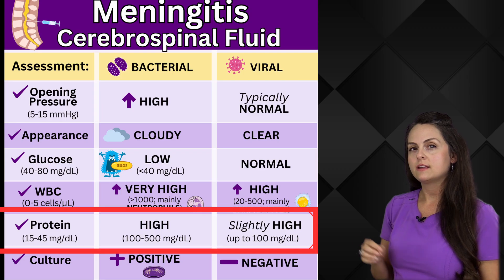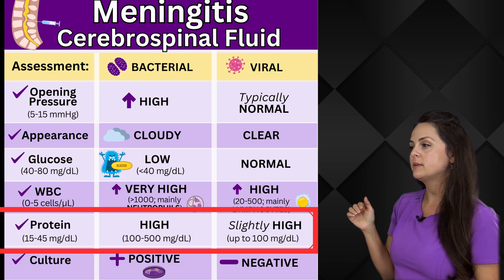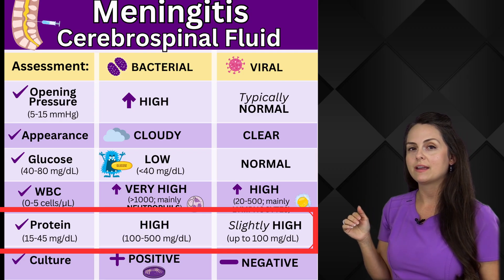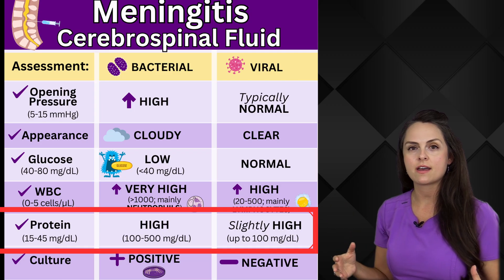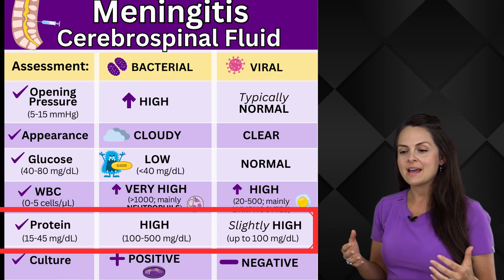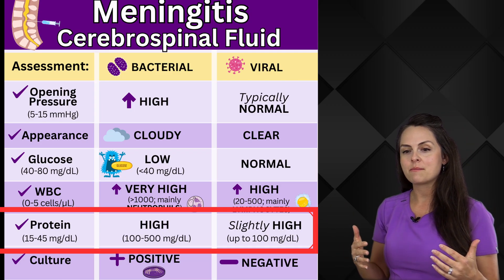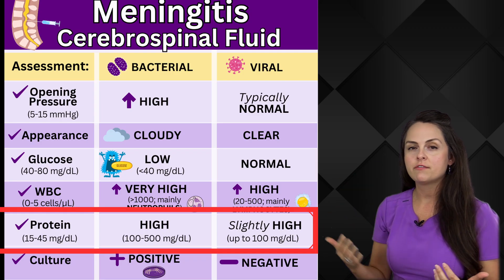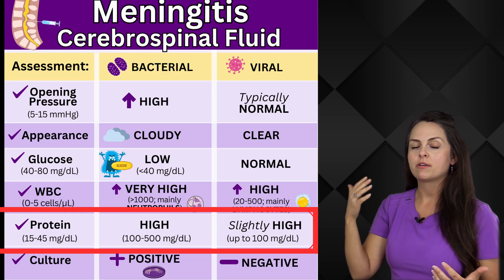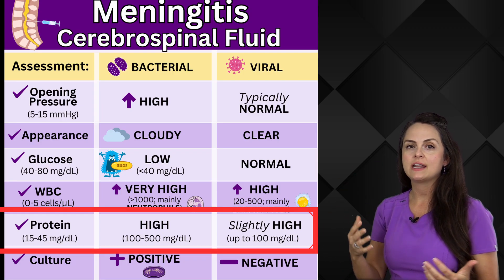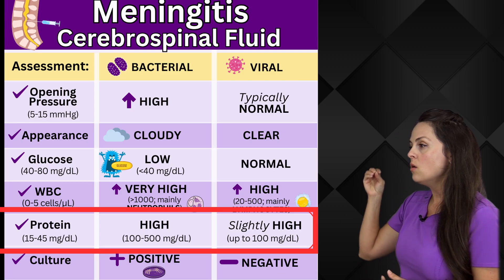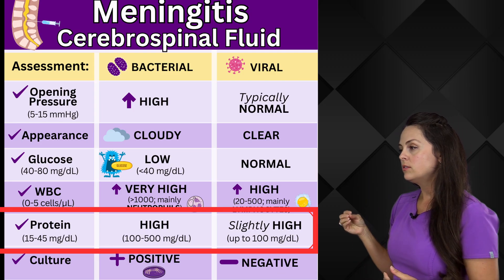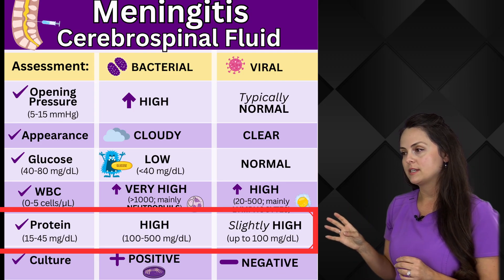With protein, in bacterial meningitis the protein will be high. The reason for this is because whenever neutrophils come, there's a lot of them that come to our CSF. But because they come, we're going to have a lot of inflammation going on, and whenever we have inflammation it actually increases vascular permeability and we get the leaking of protein. With viral, there's going to be slightly high protein.